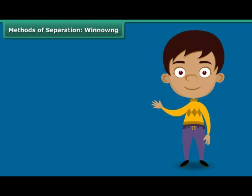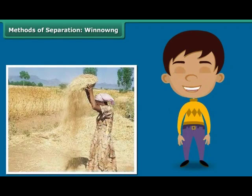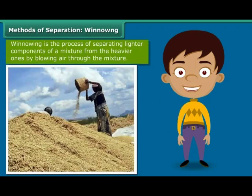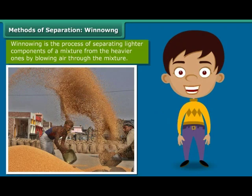During your train trips through the countryside, you would have noticed women standing at a height, shaking a basket held over their heads continuously. They are separating the grain from the husk by simply allowing the wind to blow away the husk and other lighter impurities. The heavier grain falls down on the ground in a heap. This process of separating impurities from the grain by allowing a current of air to blow away the lighter impurities is known as winnowing.